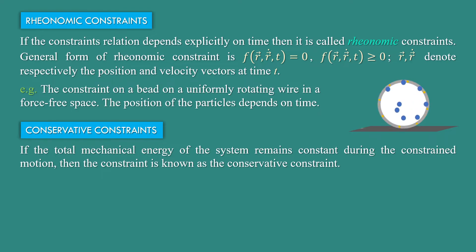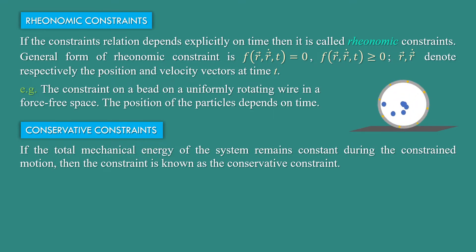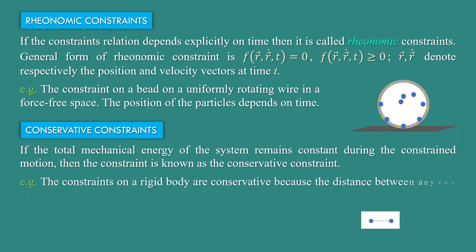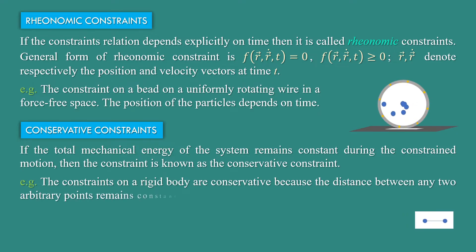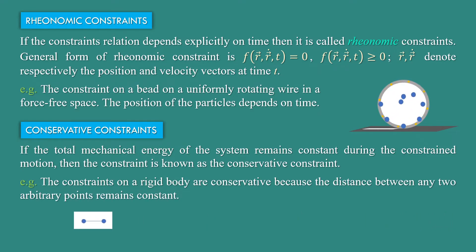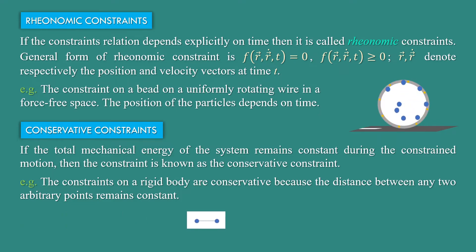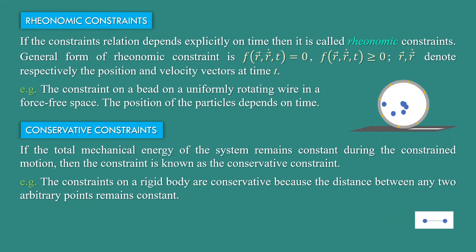Conservative constraints: if the total mechanical energy of the system remains constant during the constrained motion, then the constraint is known as a conservative constraint. For example, the constraints on a rigid body are conservative because the distance between any two arbitrary points remains constant.